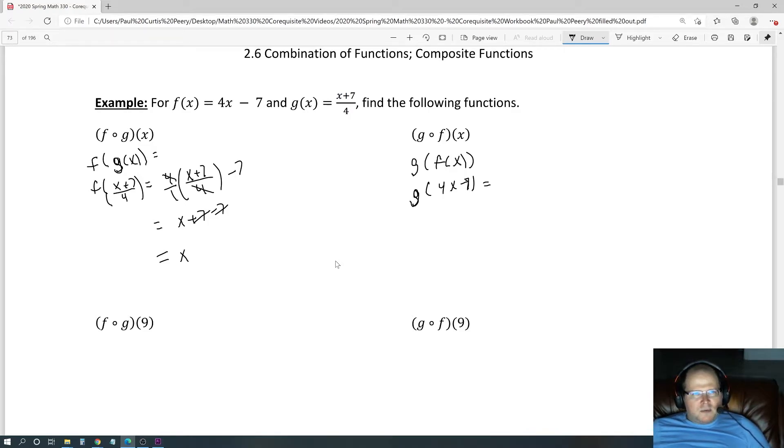This equals (4x - 7 + 7)/4. If I drop the parentheses, you can see the positive and negative 7s cancel out, leaving 4x/4. The 4s cancel out, leaving just x.